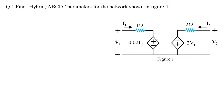The question requires finding hybrid parameters and ABCD parameters for the network shown in figure 1. In previous classes (class 1 to 10) we concentrated on z and y parameters. To understand hybrid and ABCD parameters, we will first determine z parameters, then derive hybrid parameters from them and cross-check with the actual approach, followed by finding the ABCD parameters.